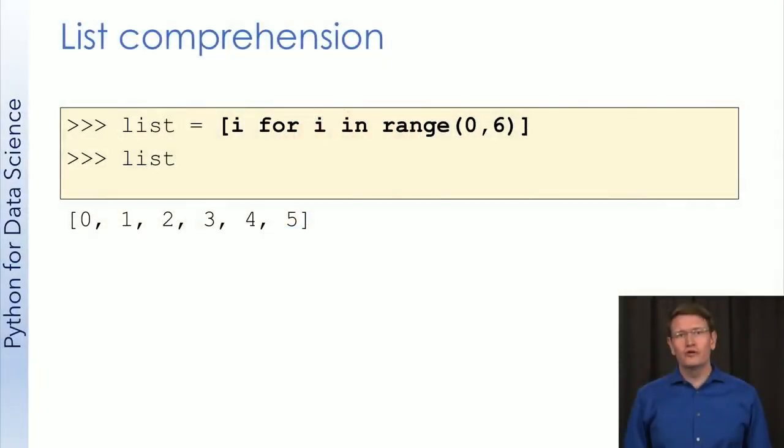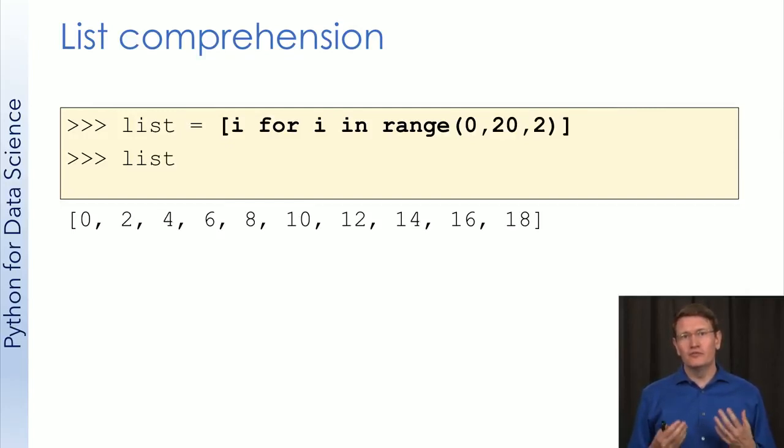Hopefully your answer is pretty close to this. Let's see just a few more examples of comprehension. If I want to have all the even values between 0 and 20, I can just use that third parameter range to specify every other value.